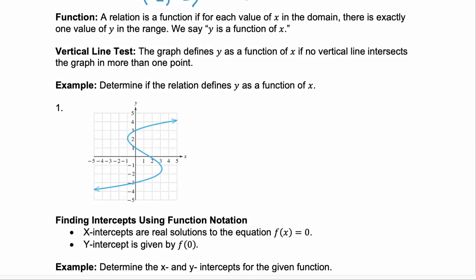A function is a relation. A relation is a set of ordered pairs x, y. A relation is a function if for each value of x in the domain, there's exactly one value of y in the range. We say y is a function of x.